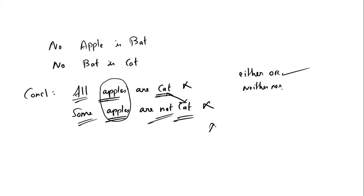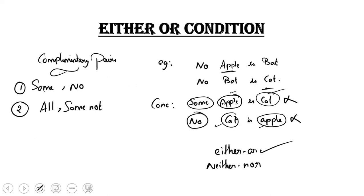All and some-note are irreversible — all and some-note are not reverse, therefore they are position dependent. Position is correct. Some and some-not are reversible.